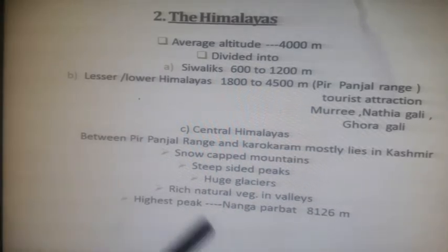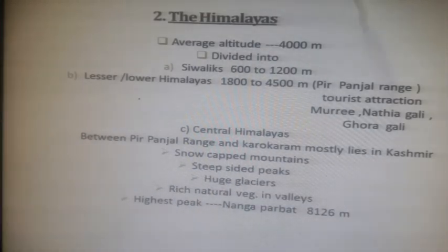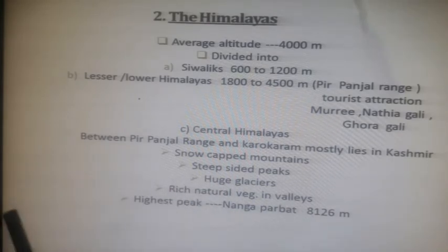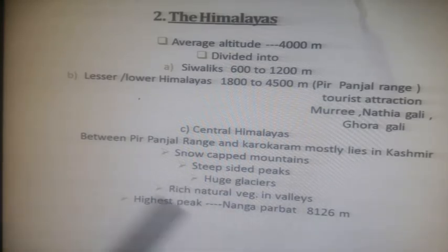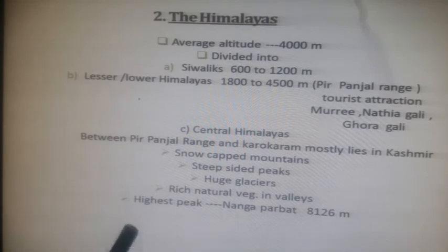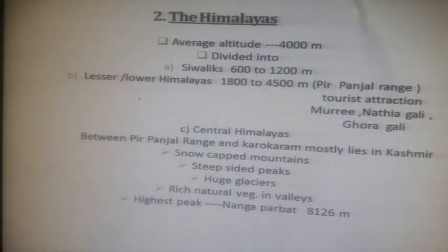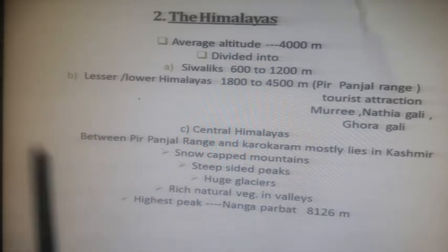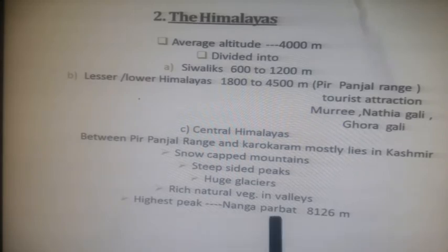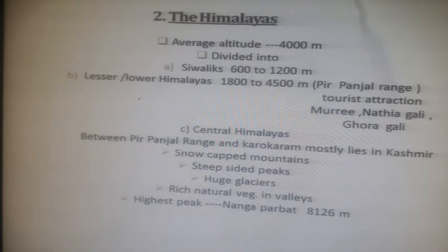The mountains of the central Himalayas are mostly snow-capped, with steep-sided peaks and huge glaciers. Natural vegetation is found only in the valleys. The highest peak in Pakistan in this region is Nanga Parbat at 8126 meters. While the tallest mountain in the world — Mount Everest — is situated in the Himalayas, the highest Himalayan peak in Pakistan is Nanga Parbat. Remember its height and how to locate it on the map.